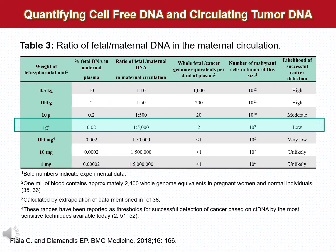We assumed that in prenatal screening programs that usually take place at about 10 to 20 weeks gestation, the fetal DNA makes up about 5 to 10% of total cell-free DNA. Using these numbers, we constructed a table correlating the weight of the fetus or placental unit to the percent fetal DNA in maternal plasma, to the whole fetal genome equivalents per 4 milliliter of plasma (equivalent to a 10 milliliter blood tube), and the number of malignant cells that may be present. At the level of 1 gram, the mutant allele fraction is 0.02%, the ratio of fetal to maternal DNA is 1 in 5,000, and there are two whole genome equivalents per tube of blood.